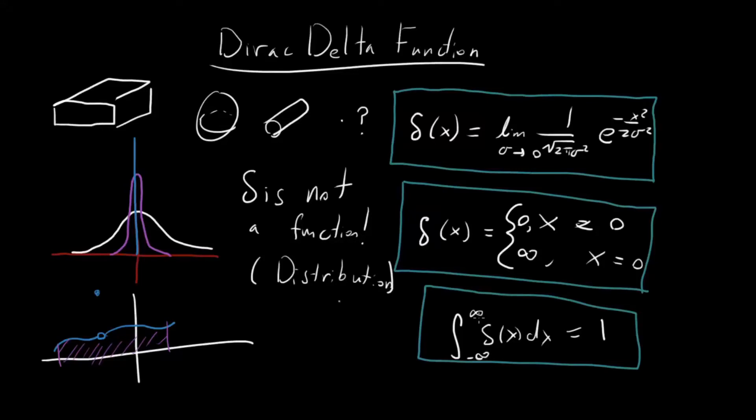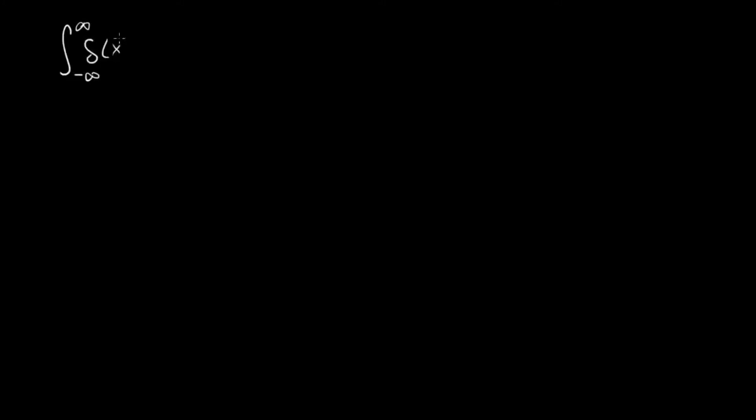Now I want to talk about how we actually use the delta function and what problems and integrals we can solve using it. What did we see previously? We saw that if you integrate from minus infinity to infinity delta of x dx, this is just some normalized Gaussian in some limit, so this is just equal to 1.